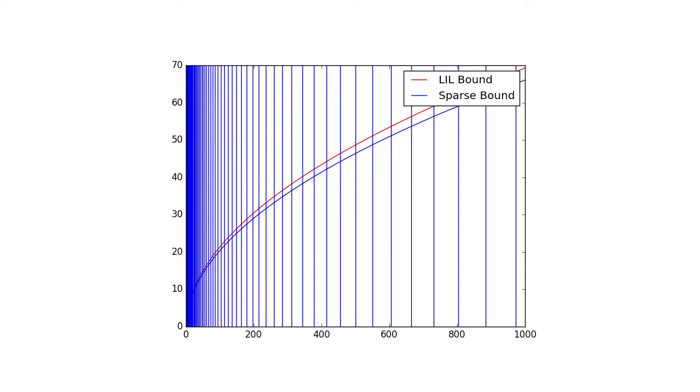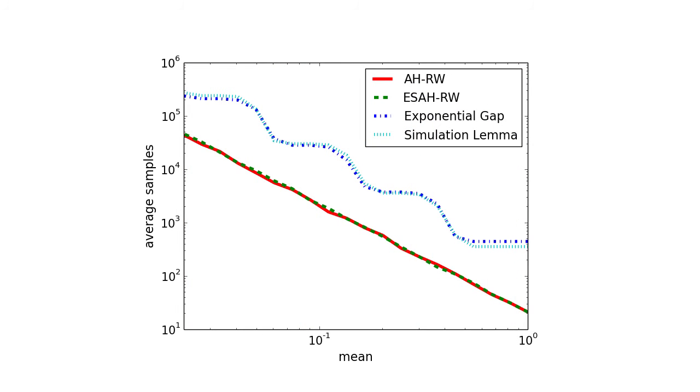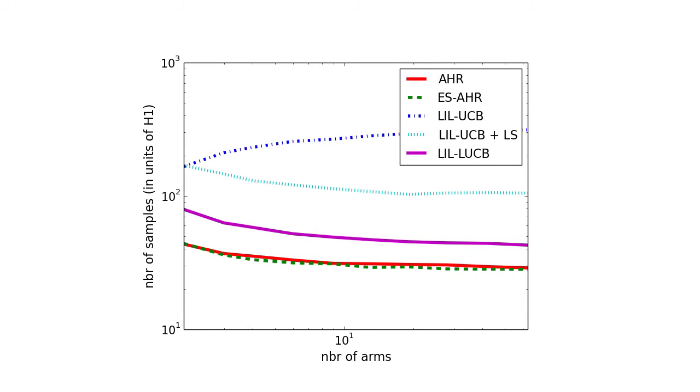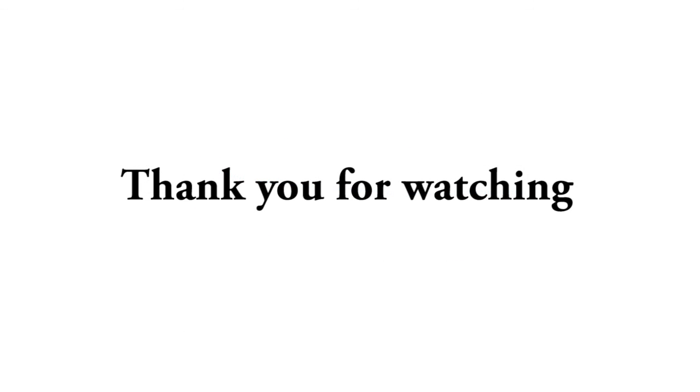We show that our algorithm significantly outperforms state-of-the-art alternatives on hypothesis testing to see if a random variable has positive mean and best arm identification. For detailed information about the implementation and baselines compared, please refer to our paper.